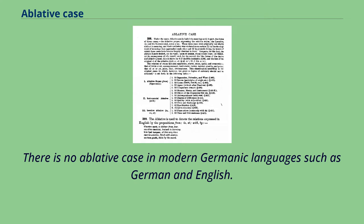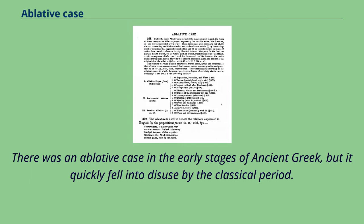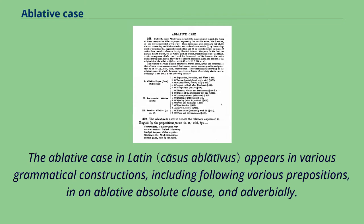There is no ablative case in modern Germanic languages such as German and English. There was an ablative case in the early stages of ancient Greek, but it quickly fell into disuse by the classical period. The ablative case in Latin appears in various grammatical constructions, including following various prepositions and in an ablative absolute clause.